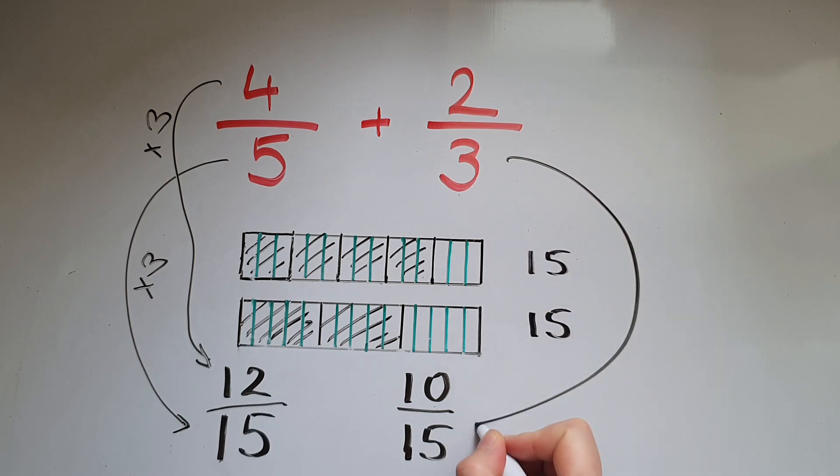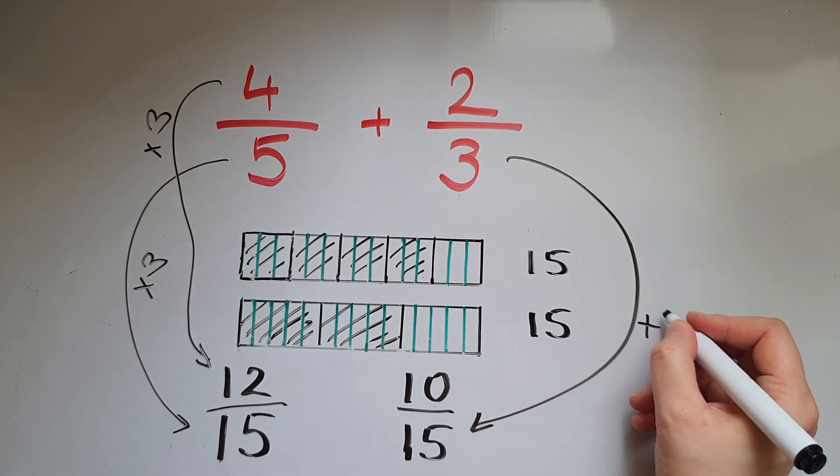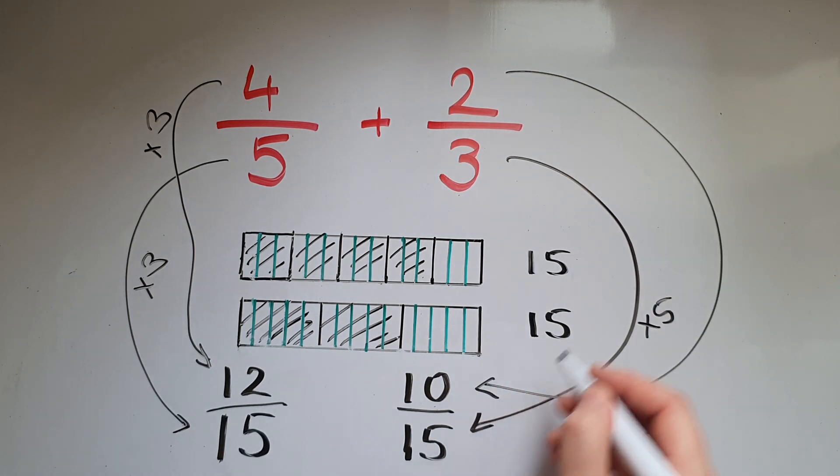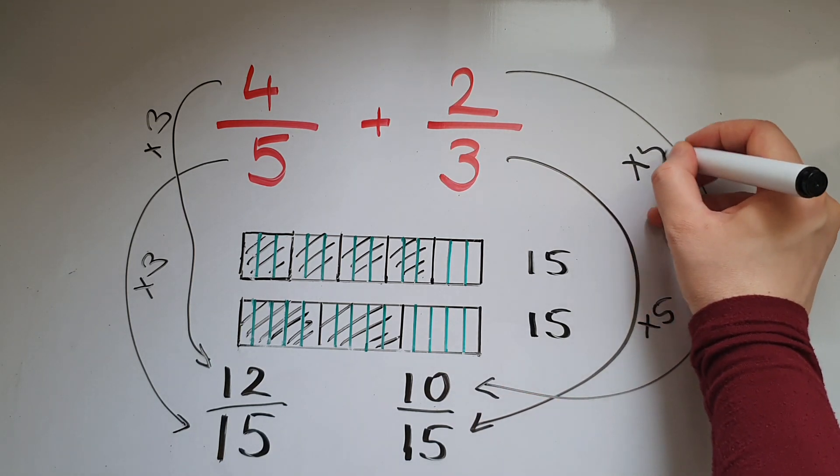So what's happened? Three has been multiplied by five and two has been multiplied by five as well.